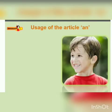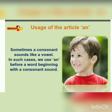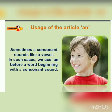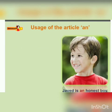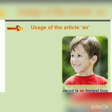Sometimes a consonant sounds like a vowel; in such cases we use 'an' before the word. For example, 'Javed is an honest boy.' Here 'honest' starts with 'H', which is a consonant, but it is pronounced like a vowel. That's why you use 'an honest boy'. Similarly, 'an hour' — H-O-U-R — before 'hour' you also use 'an'.